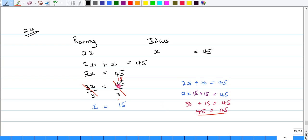Number 24. Ronnie has twice as many marbles as Julius. Together, they have 45 marbles. How many marbles does Julius have?